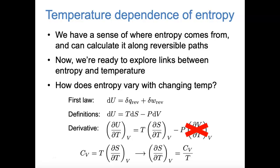So this means we know the rate at which entropy changes as temperature changes. Both constant volume heat capacity and temperature are always positive, which means this partial derivative is always positive, and entropy always increases as temperature increases. This is what we expected, but now we can be more quantitative about it.